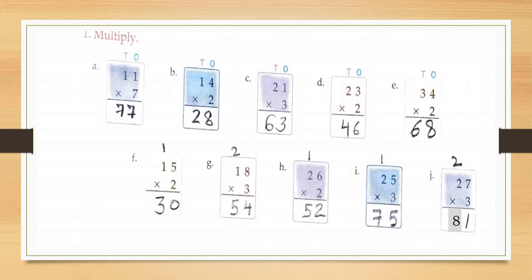Now B part: fourteen multiply by two. First multiply the ones by two — that is four into two is eight. So write eight under ones. Then multiply the tens by two — that is one into two is two. So write two under tens. So your answer will be twenty eight.